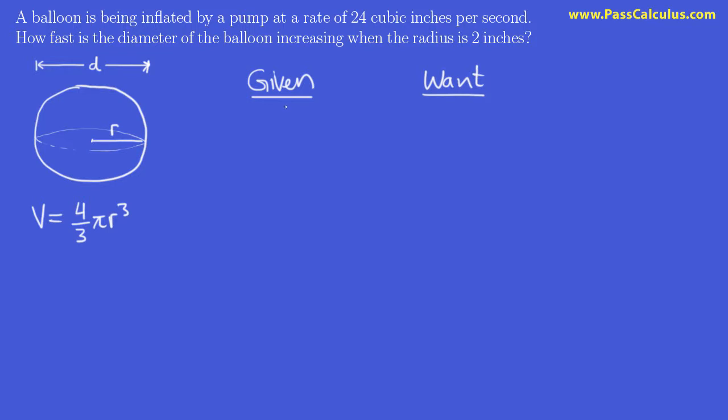We're given that the balloon is being inflated, the volume is changing at this rate, 24 cubic inches per second. So we're given that dV/dt equals 24 cubic inches per second. What do we want? We want to find the rate of change of the diameter when the radius is two inches.